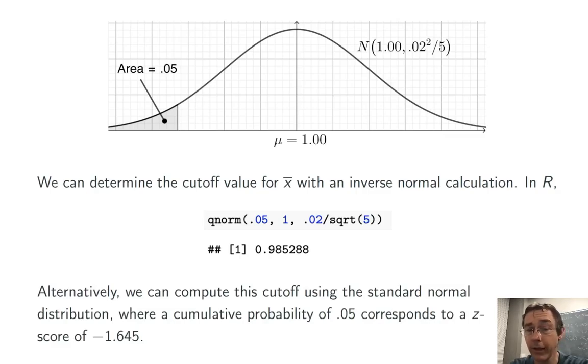We could have also computed that, for instance, using a standard normal distribution where the area of 0.05 to the left corresponds to a z-score of negative 1.645 and then transformed back from z-scores to this distribution in the usual way.